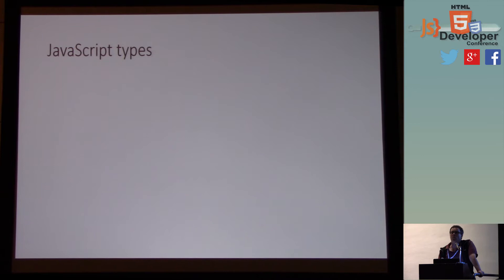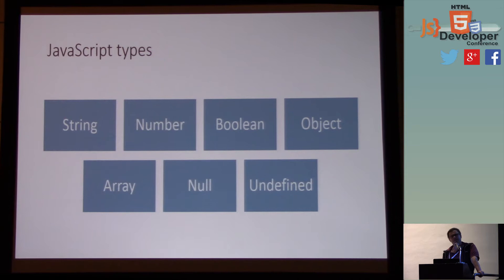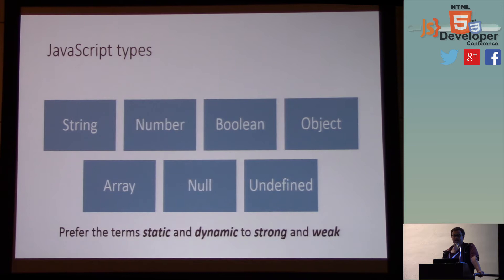Now, optional static typing — one of the features added to TypeScript. People often say JavaScript is bad for large applications because there's no types, but that's not true. There are seven types in JavaScript. What people really mean is that JavaScript is dynamically typed — the types of variables aren't known until you run the application and reach that line of code. You can declare a variable as a number and later redefine it as a string — that's dynamic typing, where types can change as the program is running.